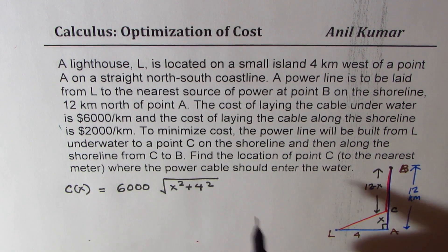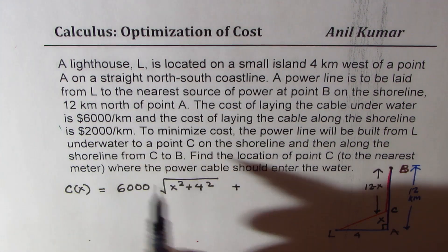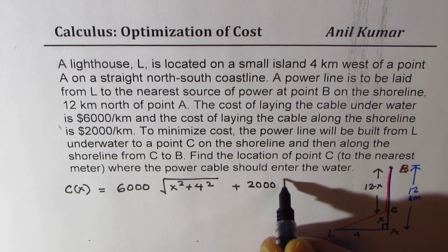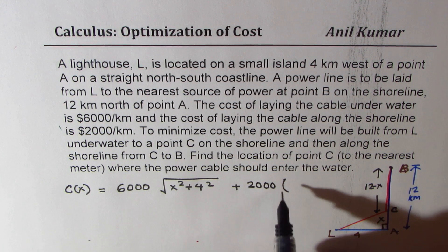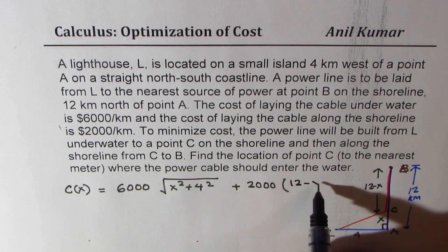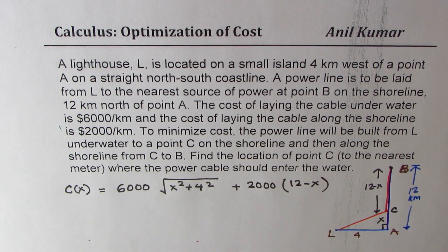Now, along the shore, the cost is $2,000. We can write 2,000 times 12 minus x. So that gives you the cost function.